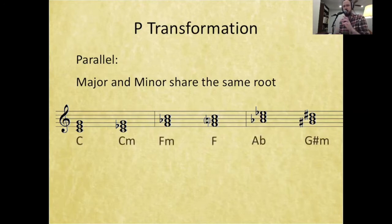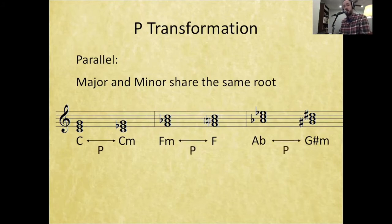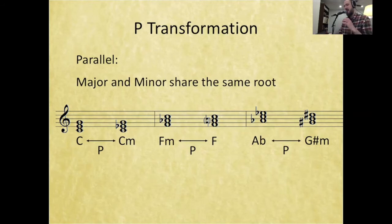For the first two examples, we've got a C major triad where the third just moves from major to minor—that's our P transformation. It works the same whether going from major to minor or minor to major, so F minor going to F major is also a P transformation.